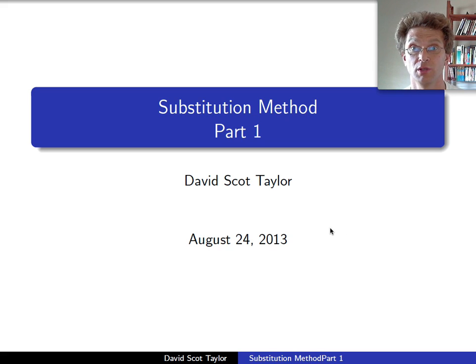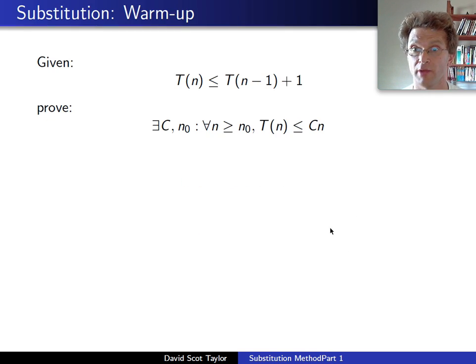Today we're going to talk about substitution, the substitution method for figuring out the solution to asymptotic notation. In this case, we're going to assume we're given some recurrence relation. We've got T(n) ≤ T(n-1) + 1, and that's just given to us. What we're going to try to prove is that T(n) is big O of n. That is, T(n) ≤ Cn. That's basically a direct interpretation from our definition of big O notation.